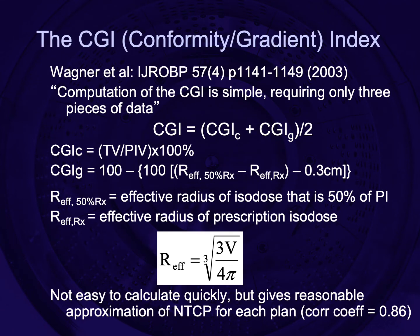There are other indices available. One called the CGI index looks at not only conformity but also the gradient outside the target. While it's a nice index, it's extremely complex to calculate, and one of the important things with an index is that it's easily calculated.